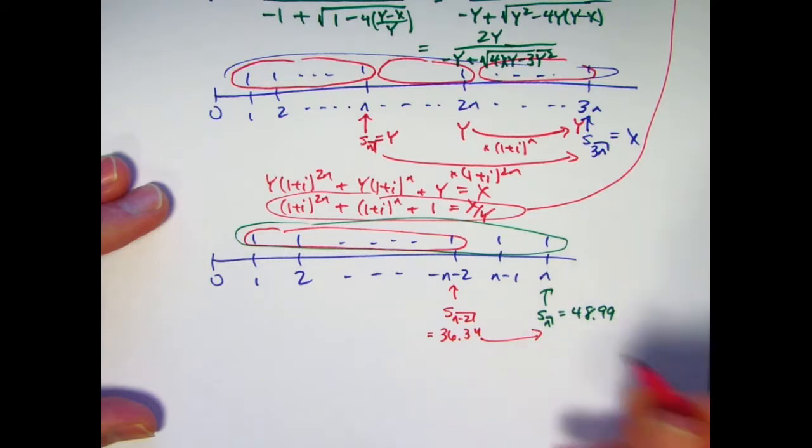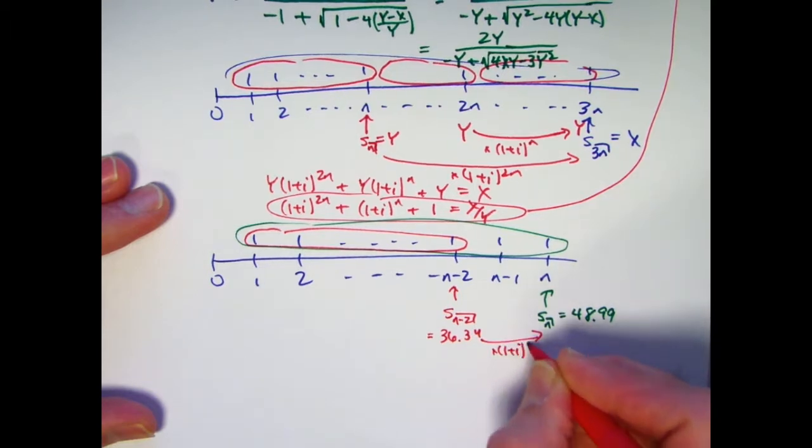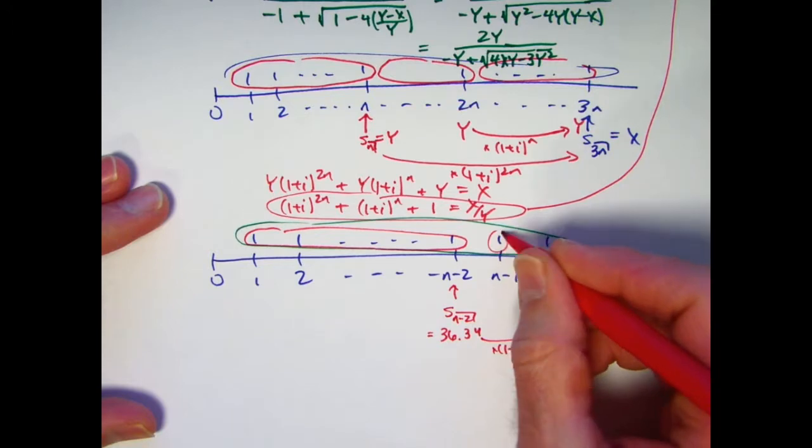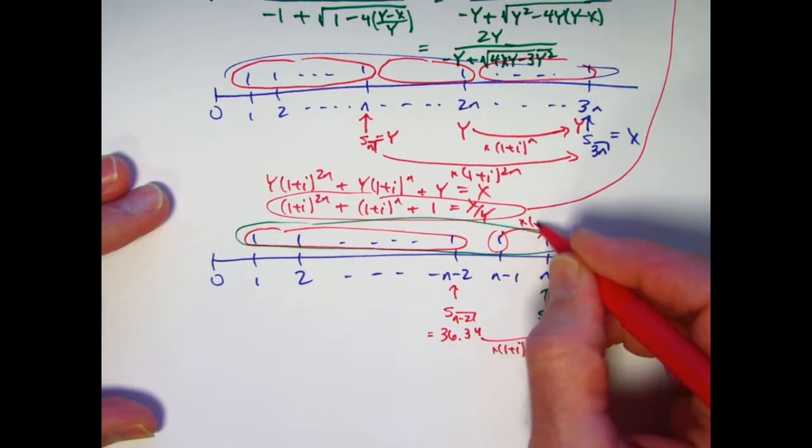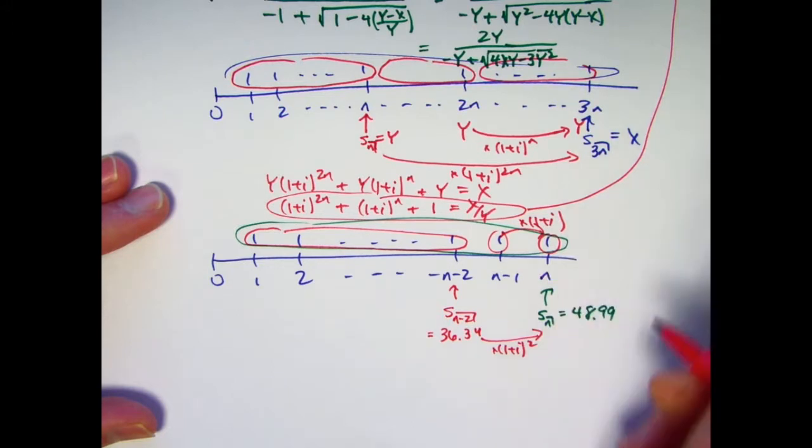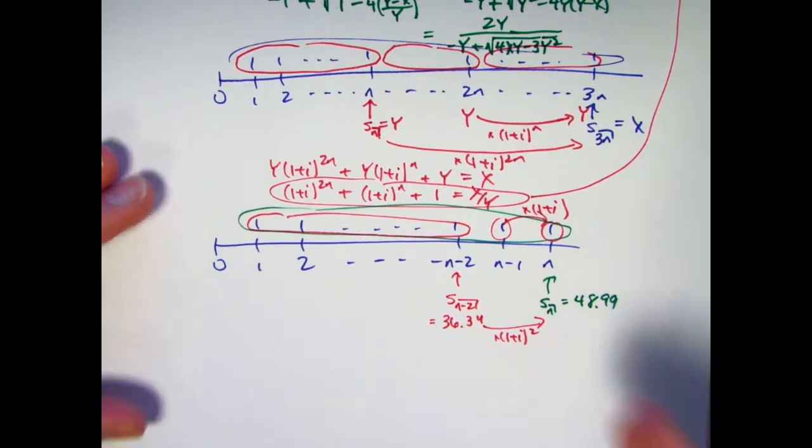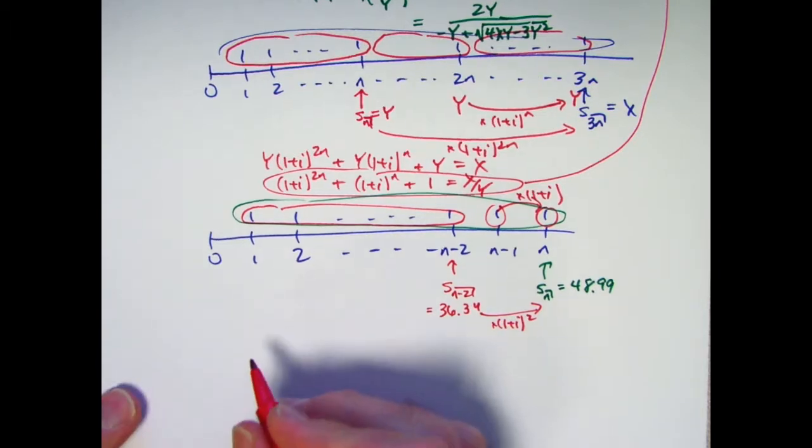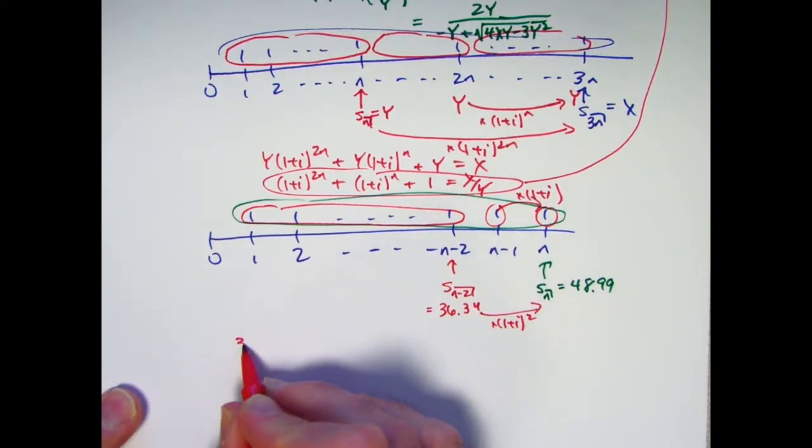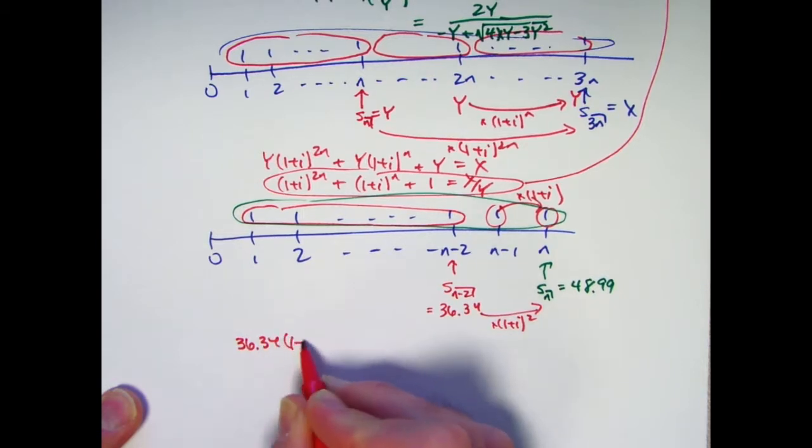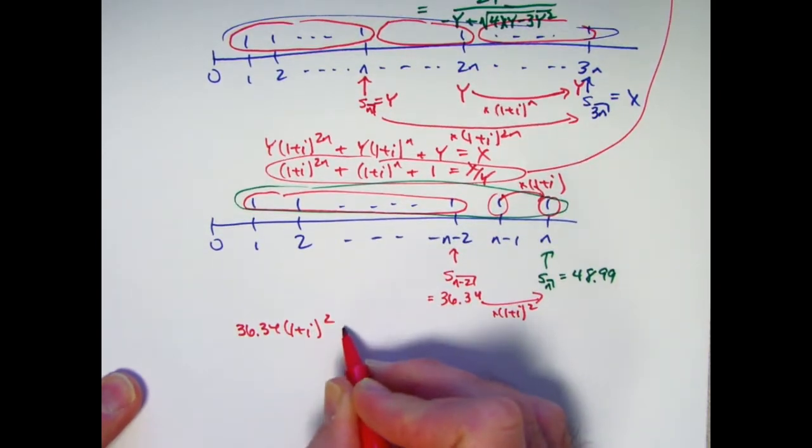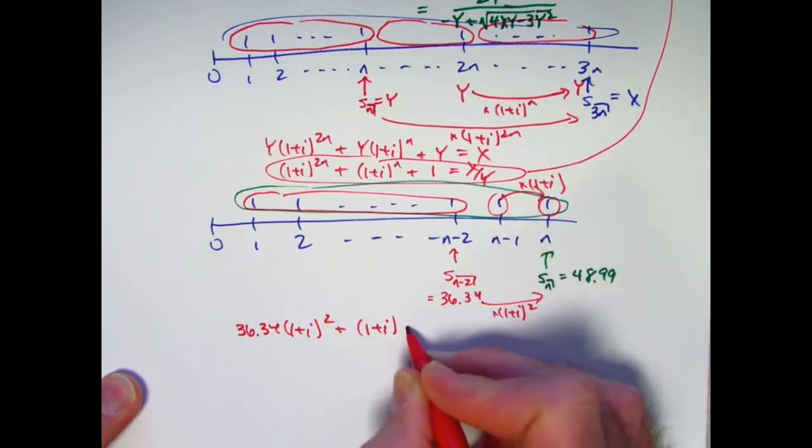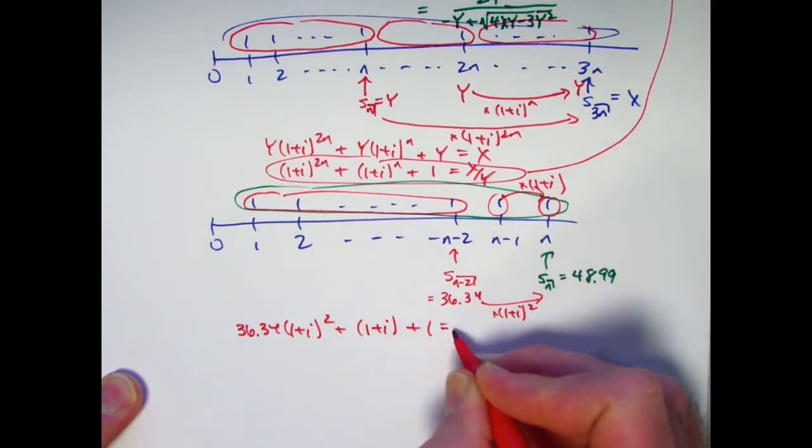Consider the first n minus 2. The future value immediately after that last payment would be sn minus 2. And this is the 36.34. If I promote that forward in time by 2 years, I need to multiply it by 1 plus i squared. Then if I take this one and promote it in time by 1 year, multiply it by 1 plus i, and then take this one and add them up, I should get 48.99. That's the idea. That's the problem solving idea of equivalence of these ways of getting at that future value for the entire income stream. So I can say that 36.34 times 1 plus i squared plus 1 times 1 plus i plus 1 must equal 48.99.